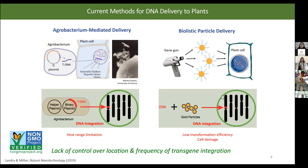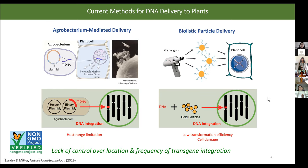Biolistic particle delivery is a much more brute force method, but more independent of plant species, tissue type, and cargo type. We dehydrate cargo such as DNA, RNA, or protein onto gold particles, load these onto a gene gun, and literally shoot the cargo into the plant, bypassing the cell wall and membrane. Both methods have a lack of control over the location and frequency of transgene integration, and transgenes often must be crossed out through laborious plant breeding to comply with GMO regulations.